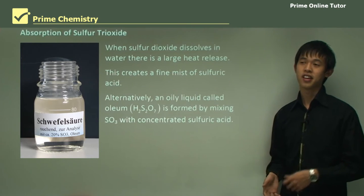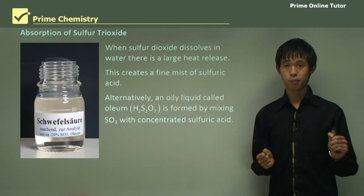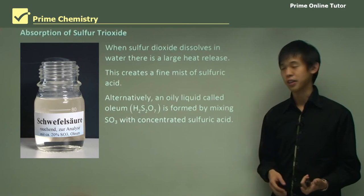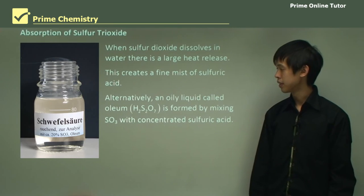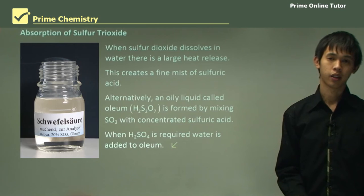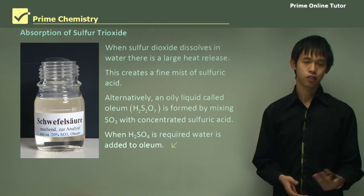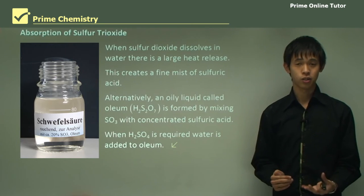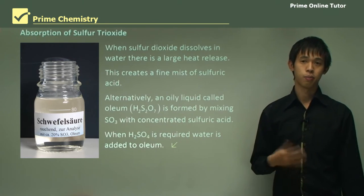Alternatively, instead of dissolving SO3 in water, we pump it through more sulfuric acid. The sulfur trioxide is pumped through pure sulfuric acid, which creates oleum — an oily mixture with formula H2S2O7. When H2SO4 is required, all we have to do is add water to the oleum. That concludes today's lesson on the conditions of the contact process and the production of SO2 and SO3, including reducing safety concerns when producing sulfuric acid.